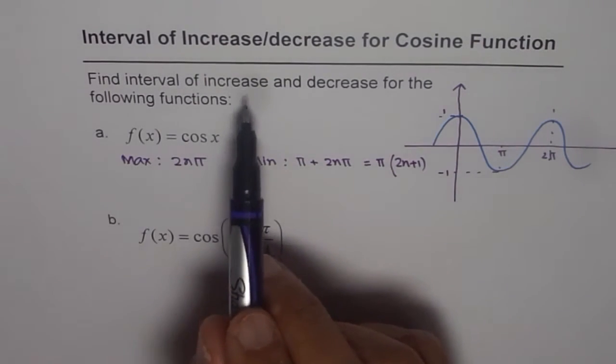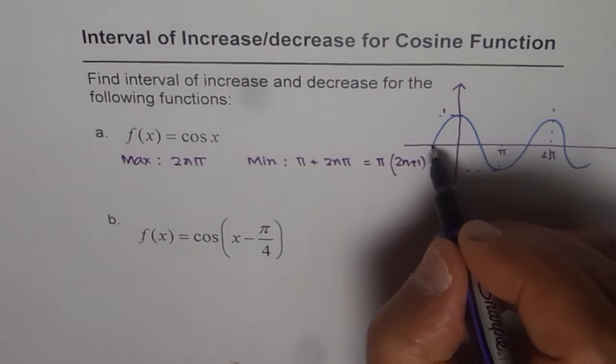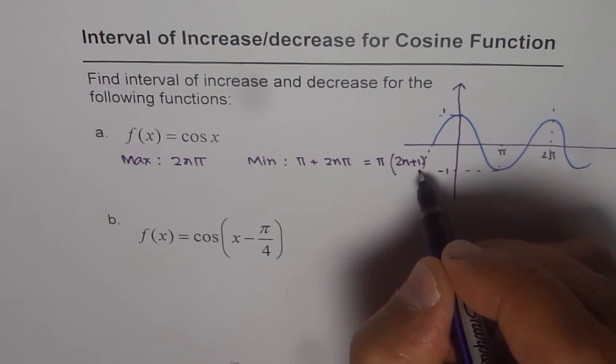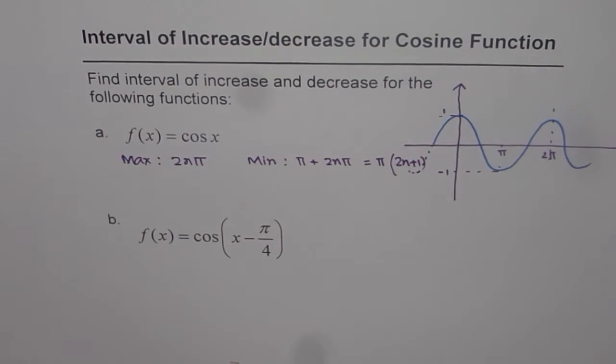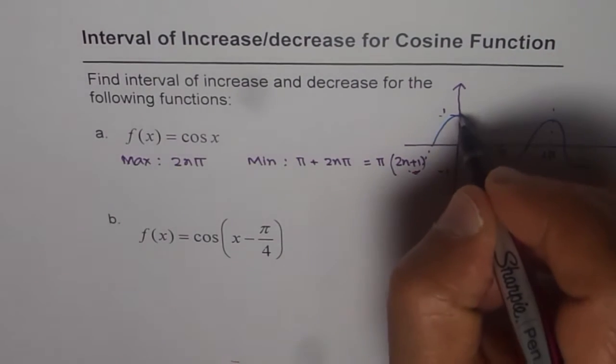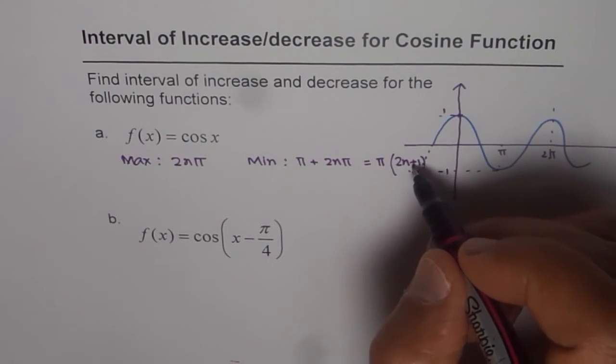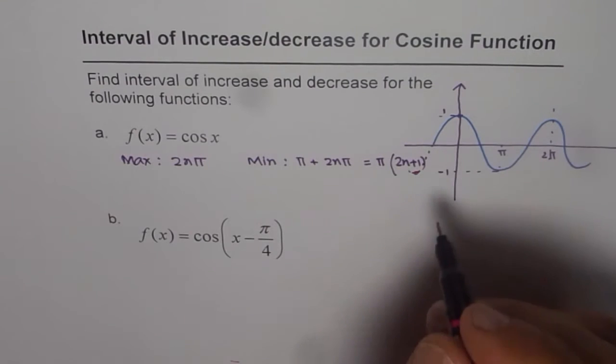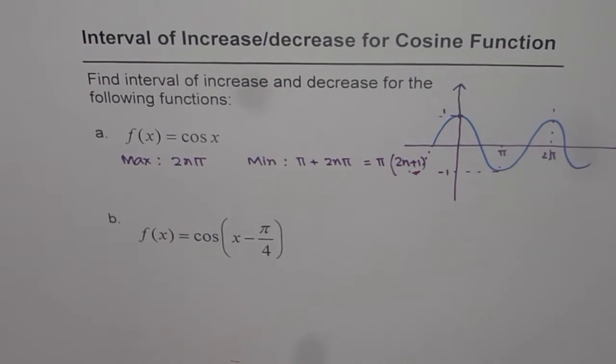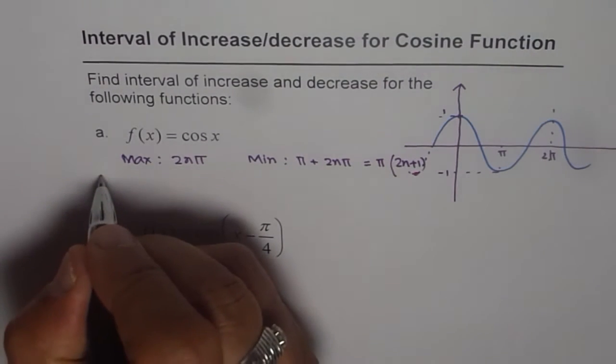Now, interval of increase is from, well, we can continue it like this here. Now, let me just use a different thing here. Increase will be from here to there, from minimum to maximum. So if we are considering before n pi, it will be 2n minus 1. So interval for increase, I can write as, so for increase,